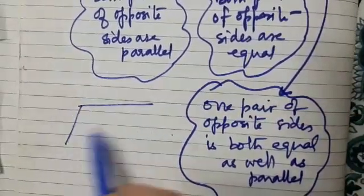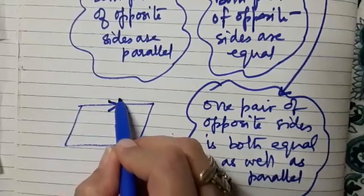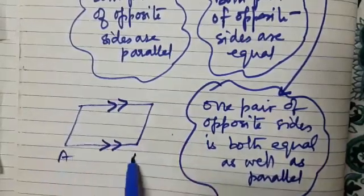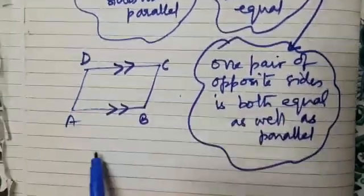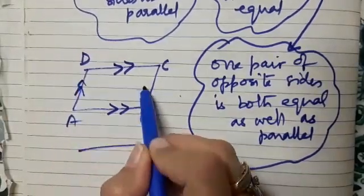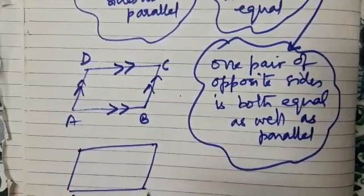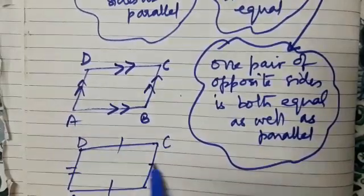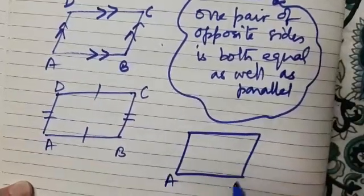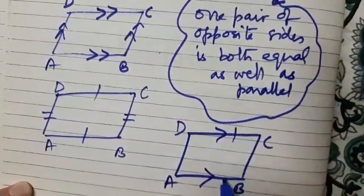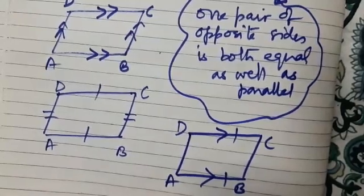I hope you can see this figure. The first case: when both pairs of opposite sides are parallel, then we say ABCD is a parallelogram. The second case: when both pairs of opposite sides are equal, we also get a parallelogram. And the third case: when one pair of opposite sides is equal as well as parallel, then also we say this quadrilateral is a parallelogram.